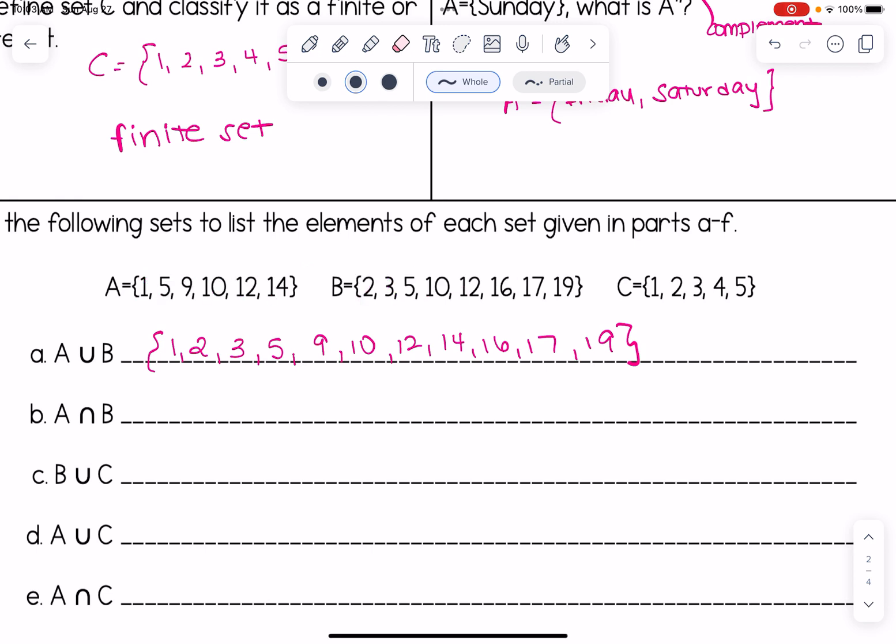All right next we want the intersection of A and B. Those are the elements that are in both sets. So we can look at this and we can see that they both have the element of five. They both have the element 10 and they both have the element 12. And so that would be A and B or the intersection of A and B.